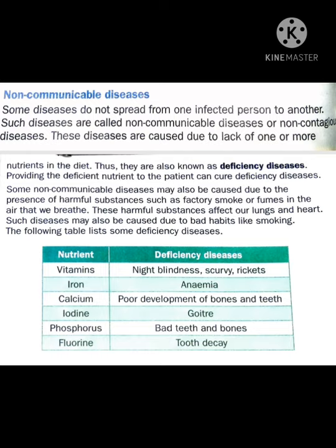Iodine is a mineral and its deficiency causes goiter. Phosphorus deficiency causes bad teeth and bones. Fluorine is also a mineral and its deficiency causes tooth decay. So these are some deficiency diseases, or we can say non-communicable diseases.